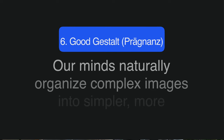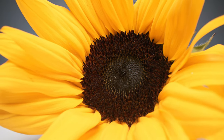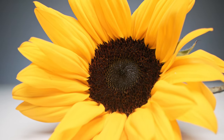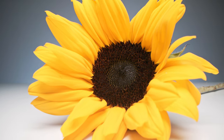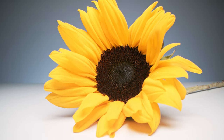The sixth principle is good gestalt, also known as pragnance. Our minds naturally organize complex images into simpler, more organized forms. There are so many details and small parts to this image, yet as we back away, we perceive it as a single flower.